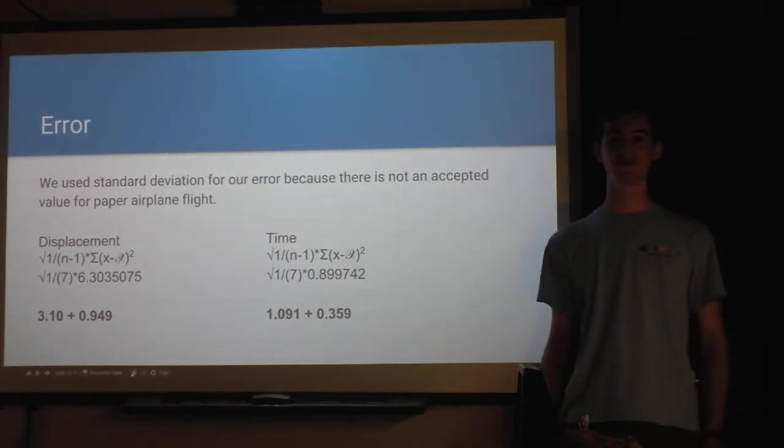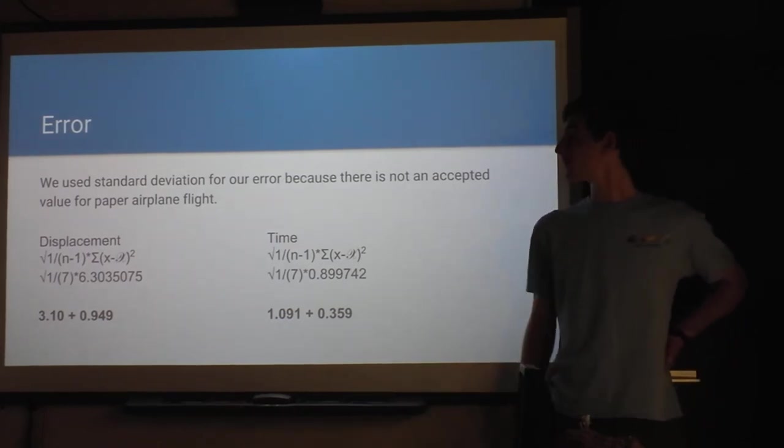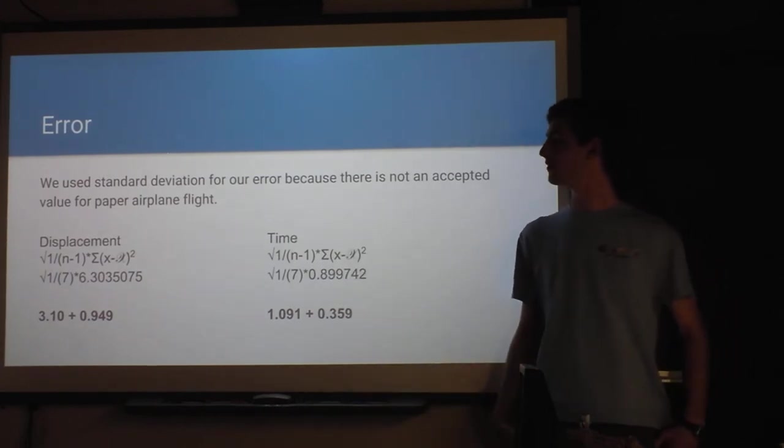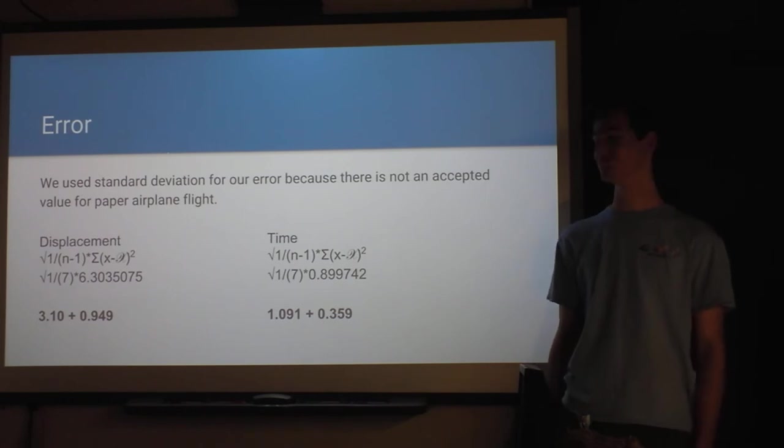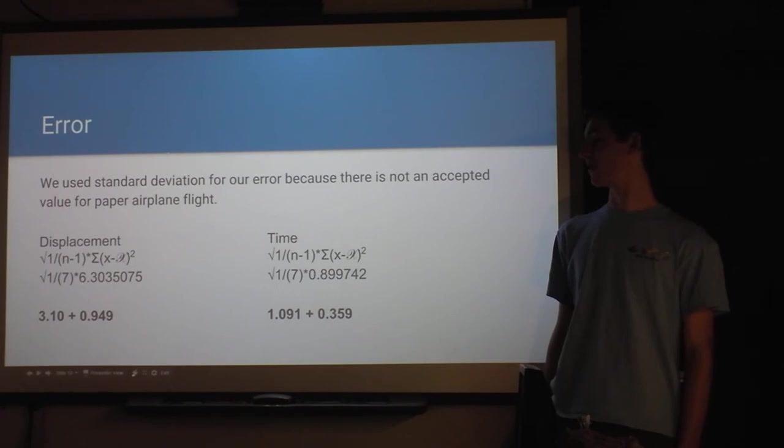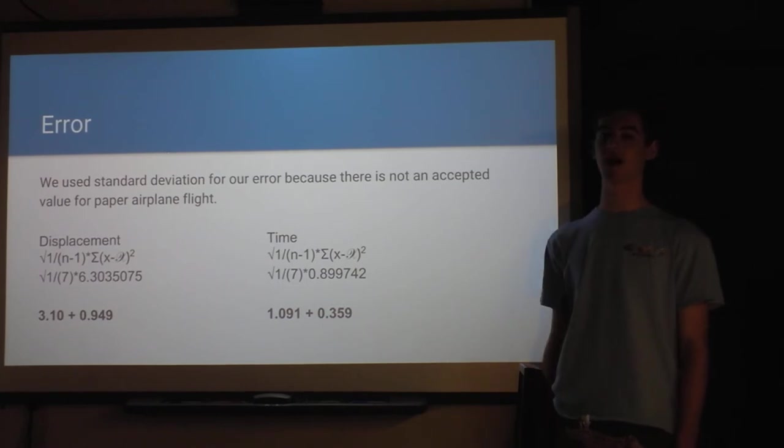So there really isn't any accepted value for the flight of a paper airplane. So we had to use standard deviation for this. And displacement, 3.1 meters on average, plus or minus almost a meter. And the time, on average, they flew 1.09 seconds, plus or minus 0.35 seconds. So the error was pretty high, about 30 to 35 percent, most of them.